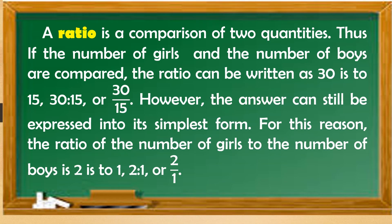A ratio is a comparison of two quantities. Thus, if the number of girls and the number of boys are compared, the ratio can be written as 30 is to 15, or 30 over 15. However, the answer can still be expressed in the simplest form. For this reason, the ratio of the number of girls to the number of boys is 2 is to 1, or 2 over 1.